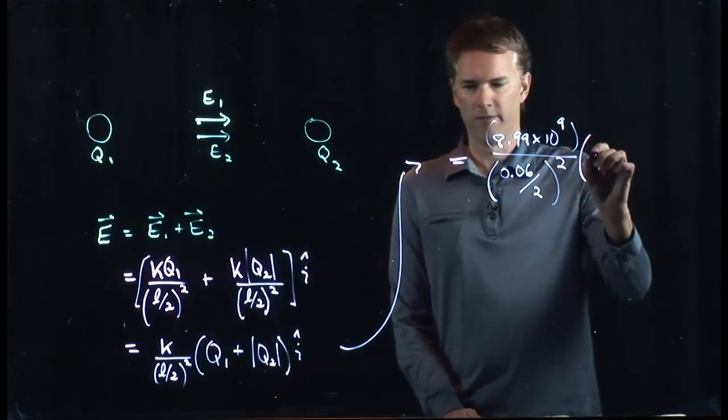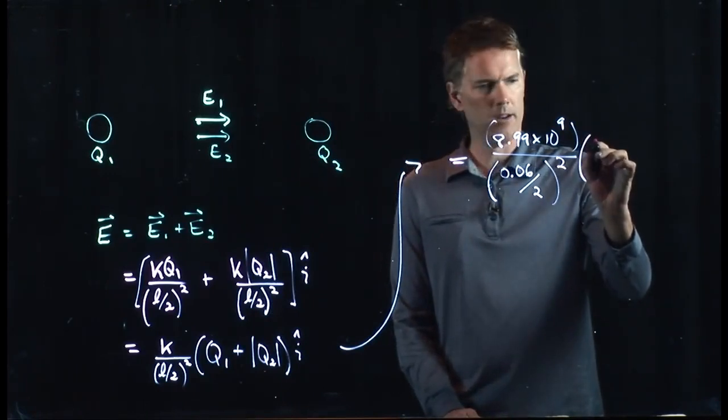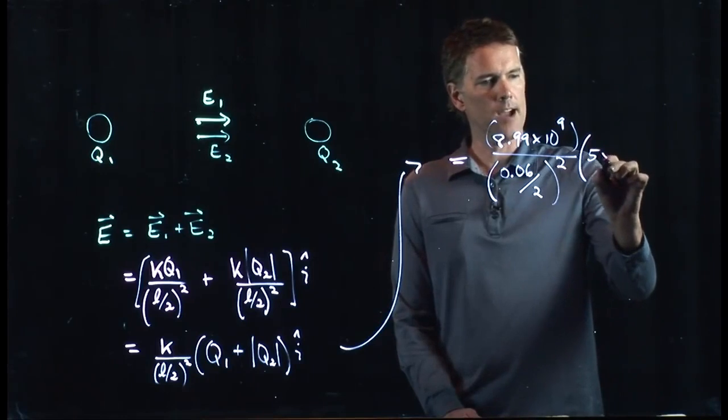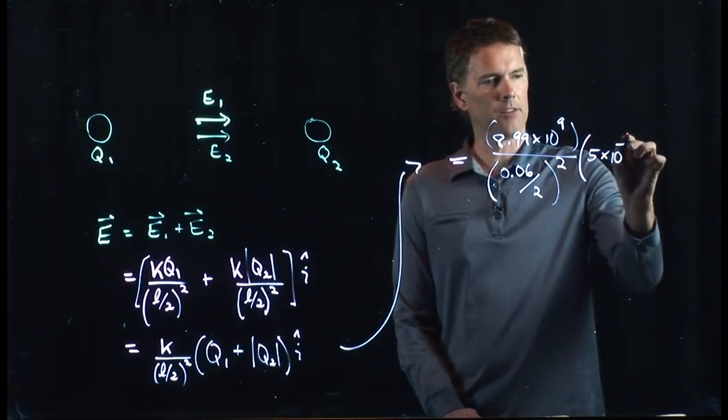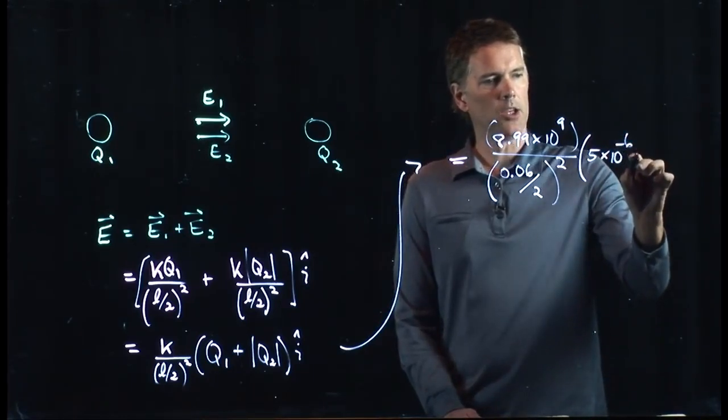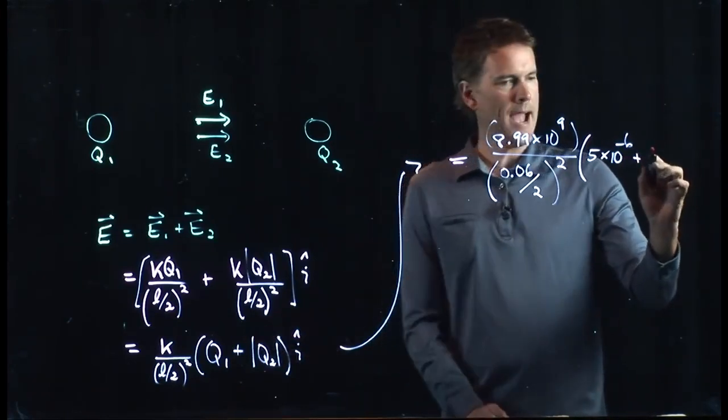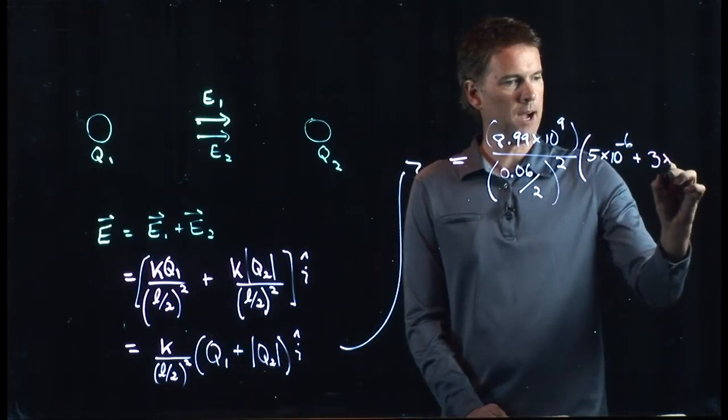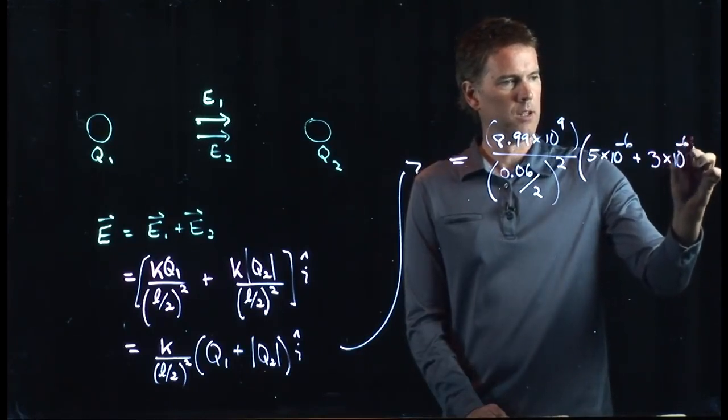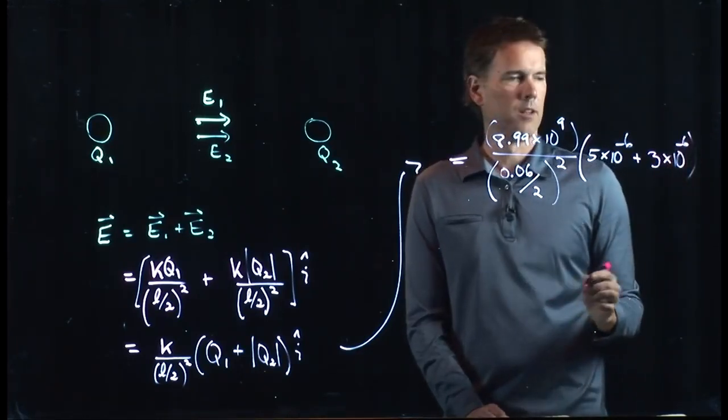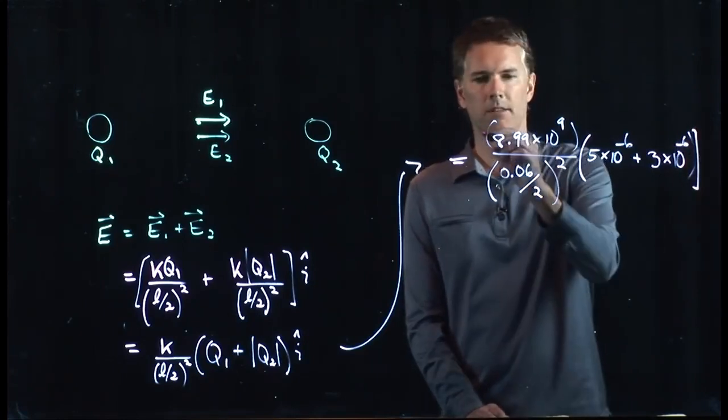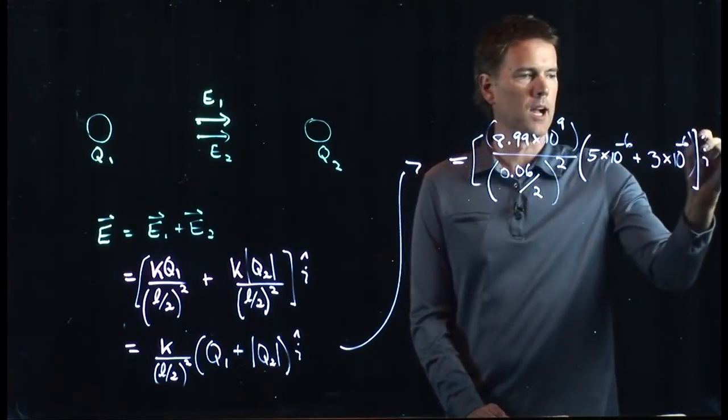Q1 was 5 microcoulombs, 5 times 10 to the minus 6. And Q2 was negative 3. So since we're doing the magnitude, it's going to be positive 3 times 10 to the minus 6. And then all of that is still multiplying i hat.